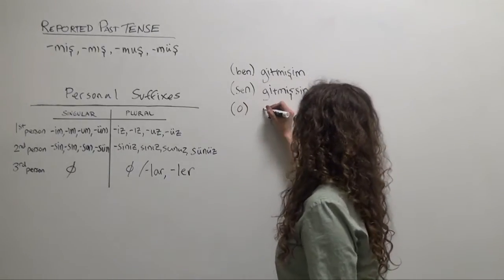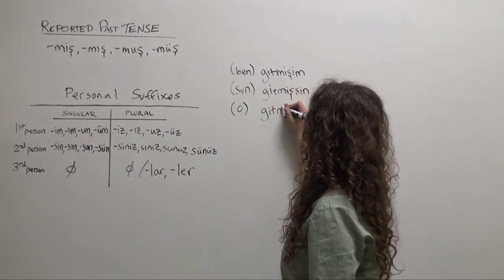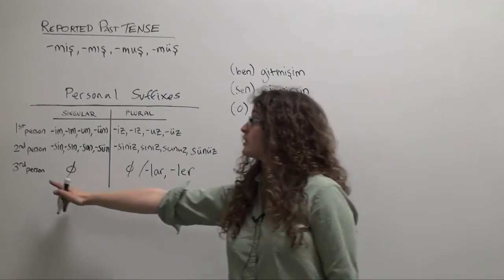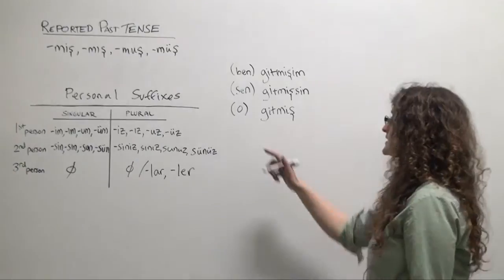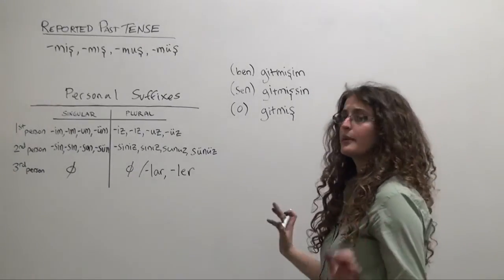O, gitmiş. And there's no third-person singular personal suffix that we're going to add. O gitmiş. He or she or it apparently went.